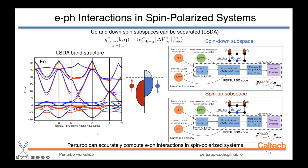For electron-phonon interaction in spin-polarized systems, up and down spin subspaces can be separated using LSDA, where up and down spins are completely independent — as are their electron-phonon matrix elements. For example, in the LSDA band structure of iron, up-spin and down-spin bands have different structures sharing the same Fermi level. PERTURBO computes separate spin-up and spin-down electron-phonon matrix elements through two independent interpolation workflows.